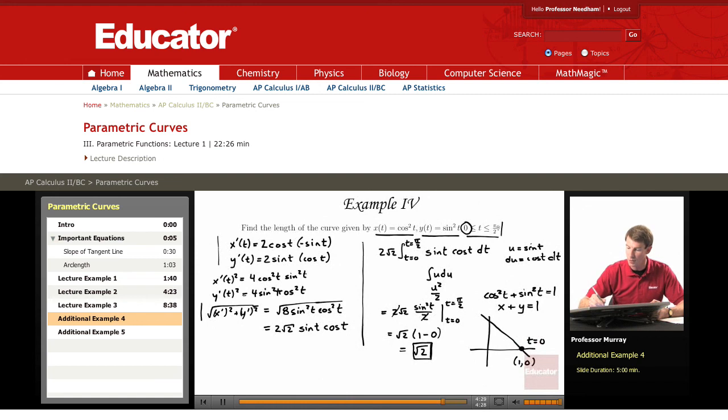If you plug in t = π/2 then y is 1 and x is 0. So there's t = π/2 at the point (0, 1).